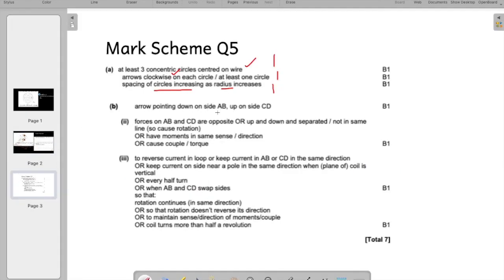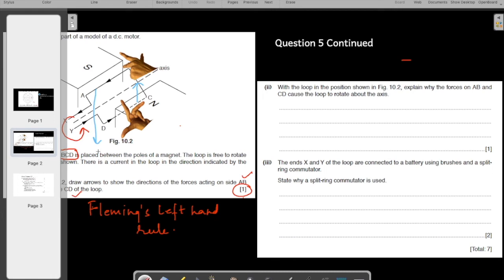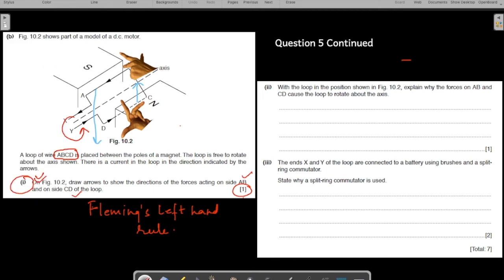Arrow pointing down on the side AB and up on the side CD. Down on AB. We have got down on AB and up on CD. Alright. Good. So, we have done it correctly. Let us move on to the next question.